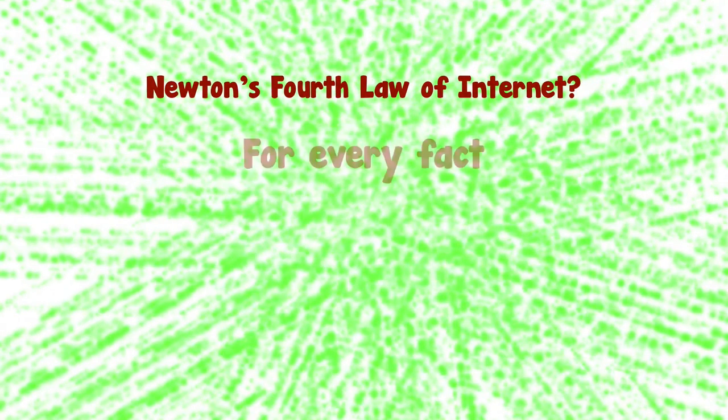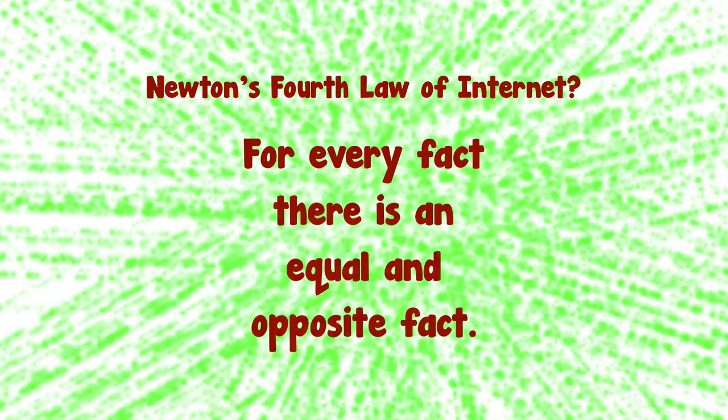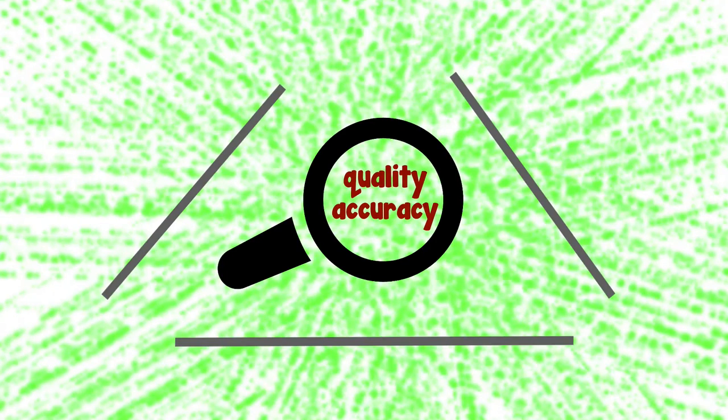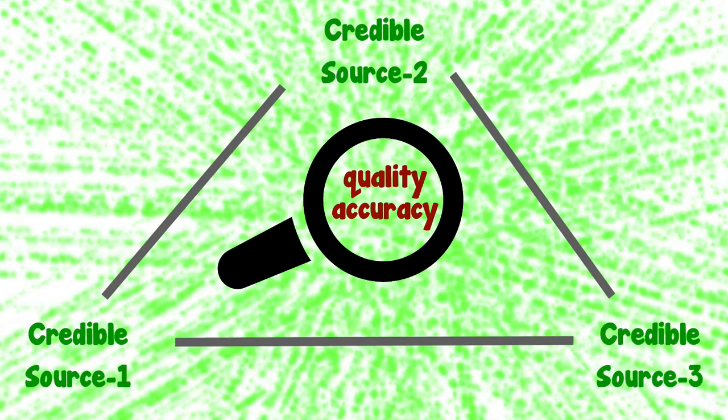Thus, in an information-abundant world, ability to analyze information becomes imperative. As they say, on the internet, for every fact, there is an equal and opposite fact. To judge the quality and accuracy of online information, a technique like triangulation of information, or looking at at least three different credible sources of information before reaching a conclusion, is very useful.